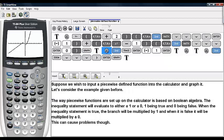The way piecewise functions are set up on the calculator is based on Boolean algebra. The inequality statement will evaluate to either a 1 or a 0, 1 being true and 0 being false. When the inequality statement is true, the branch will be multiplied by 1, and when it is false it will be multiplied by 0. That is why the plus is there to separate out each branch. But this can cause problems though.